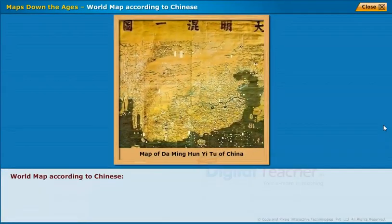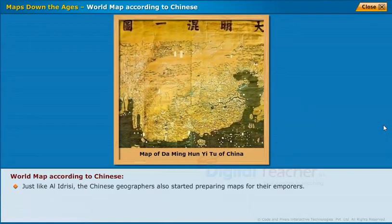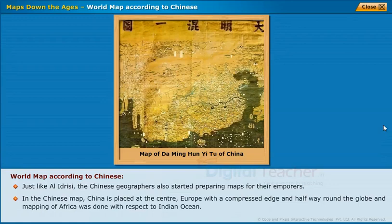World Map According to Chinese. Just like Al-Idrissi, the Chinese geographers also started preparing maps for their emperors. In the Chinese map, China is placed at the center, Europe with a compressed edge halfway around the globe, and mapping of Africa was done with respect to the Indian Ocean.